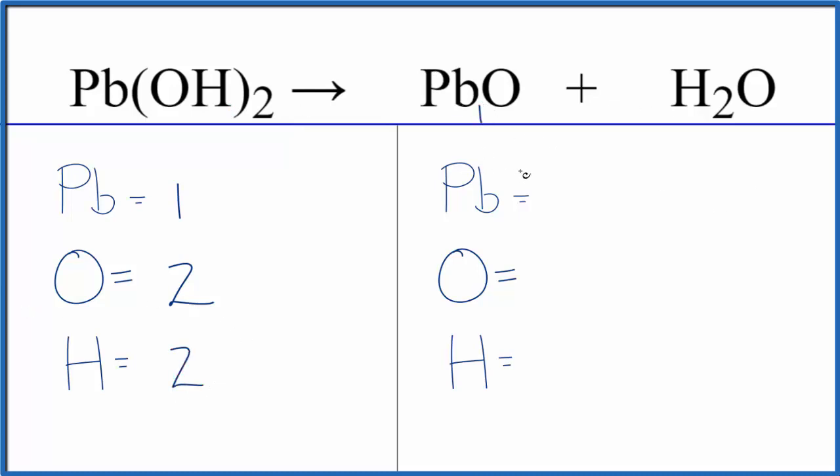On the product side we have one lead, and then we have one oxygen here, but we also have one here, so we have a total of two oxygen atoms. Be careful with that. Then we have two hydrogen atoms.